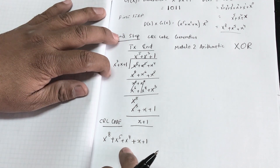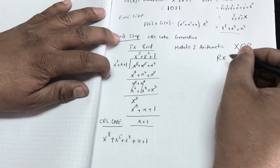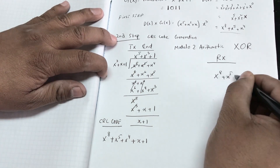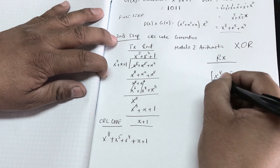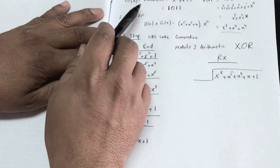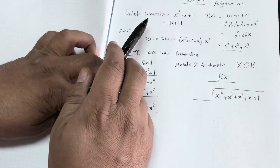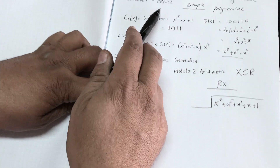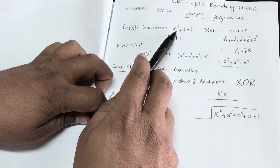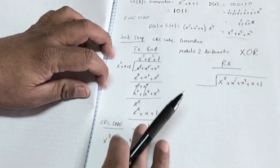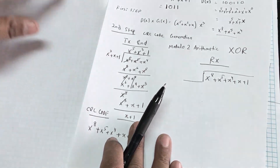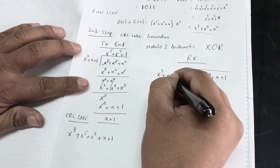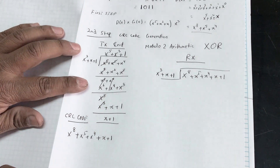Now the receiver receives this data and performs long division as well. The receiver takes x⁸ + x⁵ + x⁴ + x + 1 and performs the same long division using the same generator x³ + x + 1, which is pre-known on Ethernet as CRC-32. In our example we use our random generator.